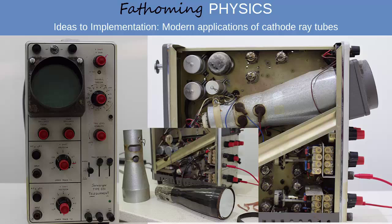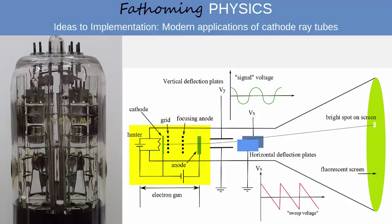Cathode ray oscilloscopes, also known by the acronym CROs, utilise an electron gun to produce a beam of electrons. The electron gun is composed of a heated cathode from which electrons are emitted, a grid which controls the intensity of the beam, and a series of anodes which serve to focus and accelerate the beam.